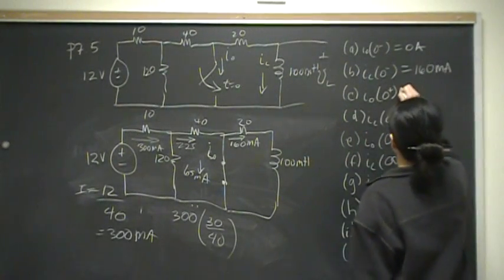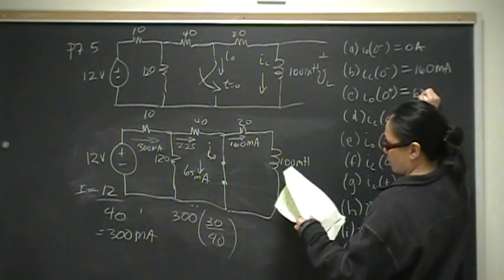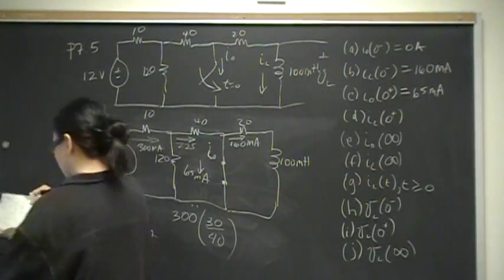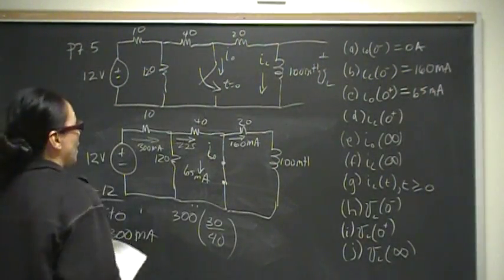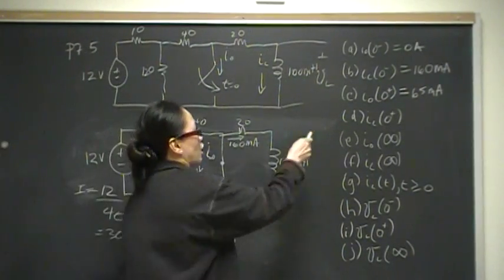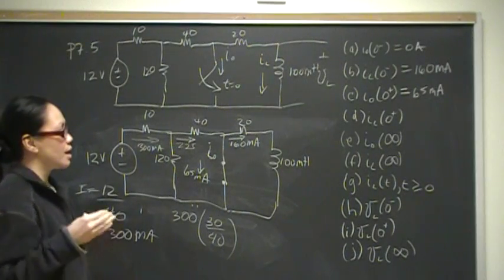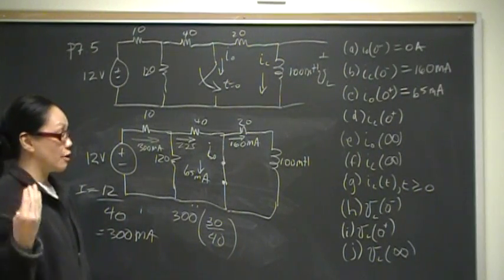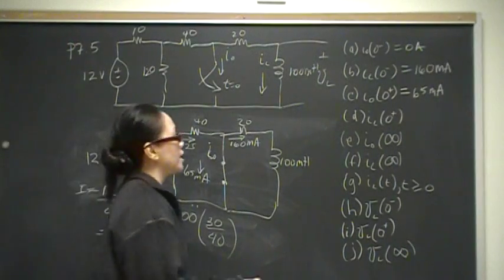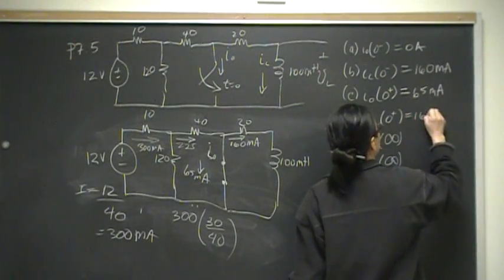So over here we have 65 milliamps through the switch at t=0+. The key property to remember is that an inductor cannot change current instantaneously. For part D, the inductor current right after switching happens is still 160 milliamps, because it can't change instantaneously.